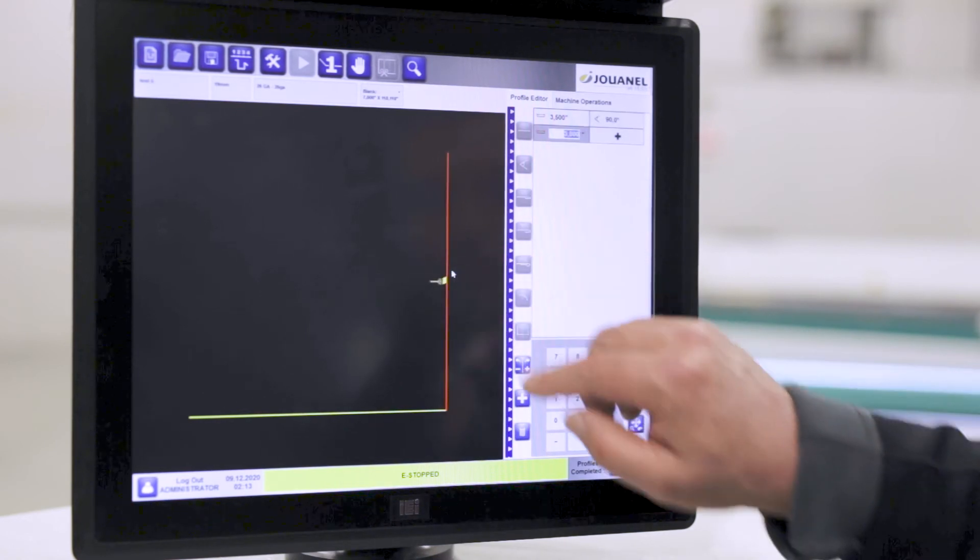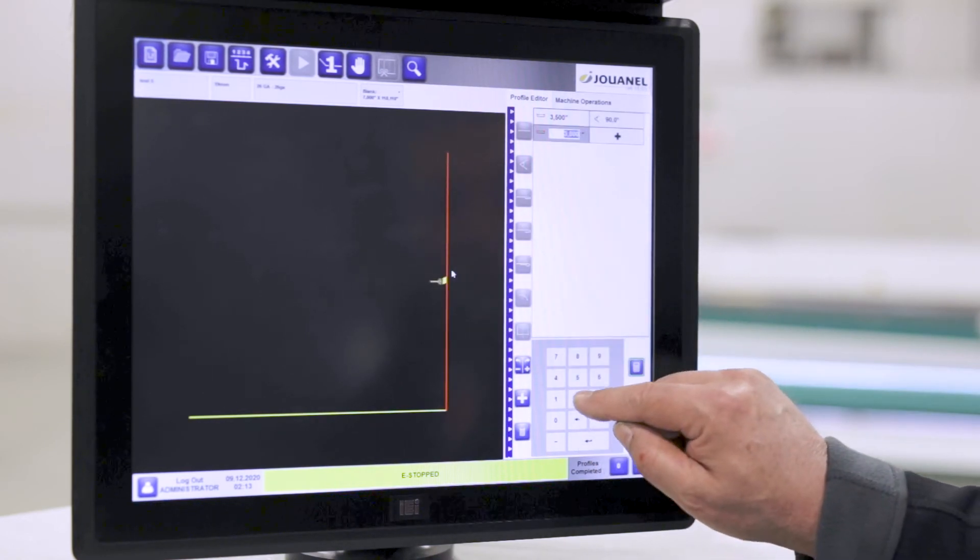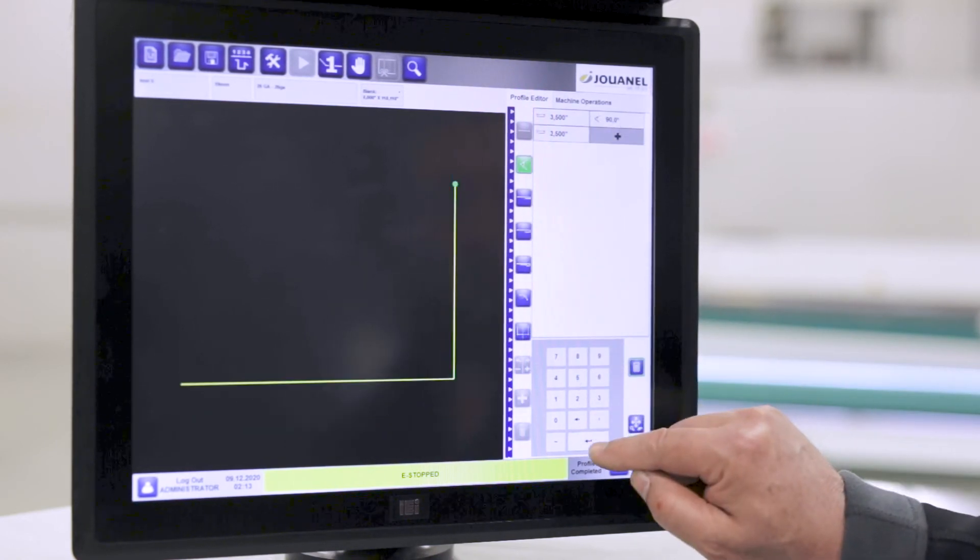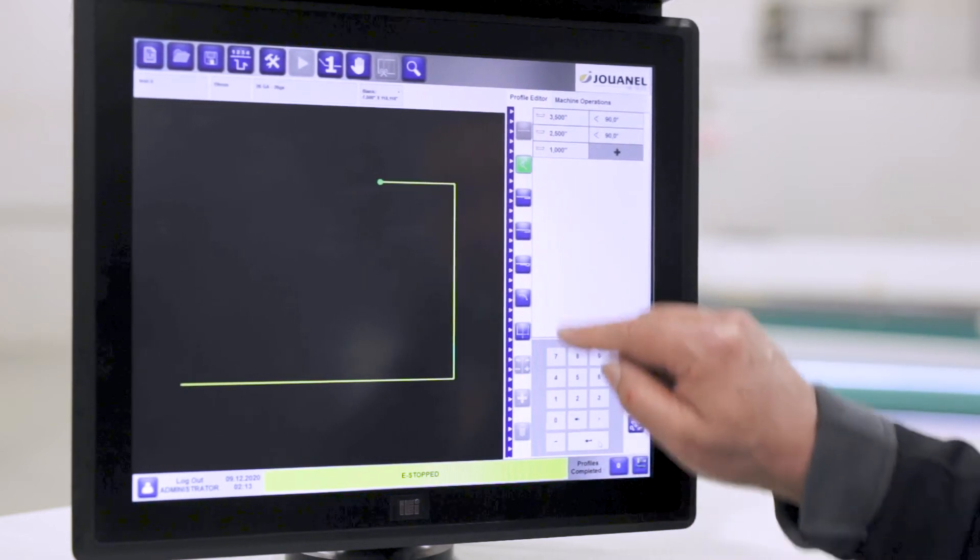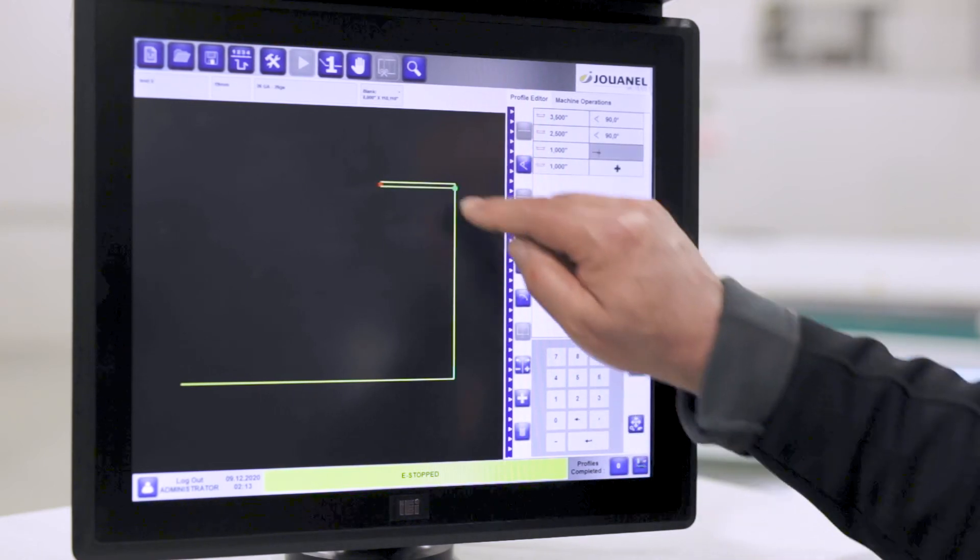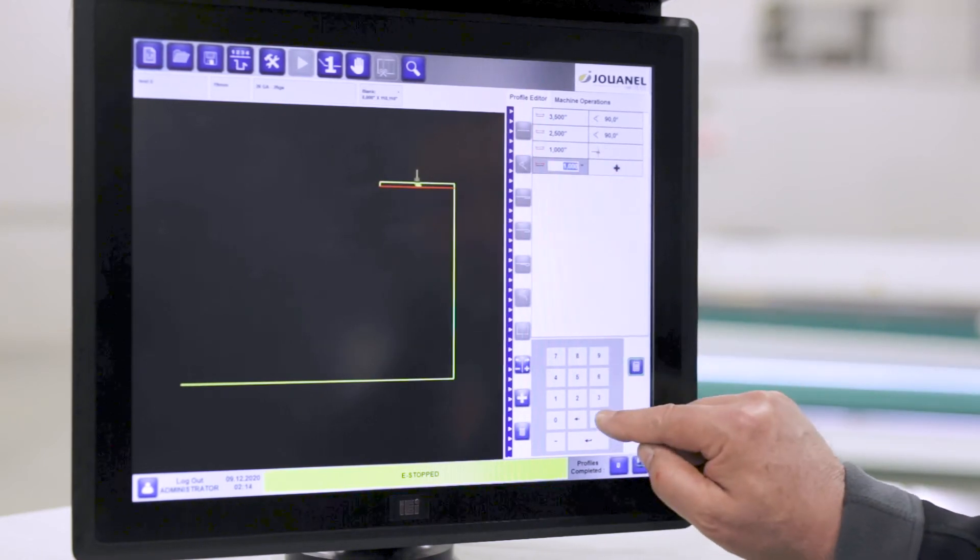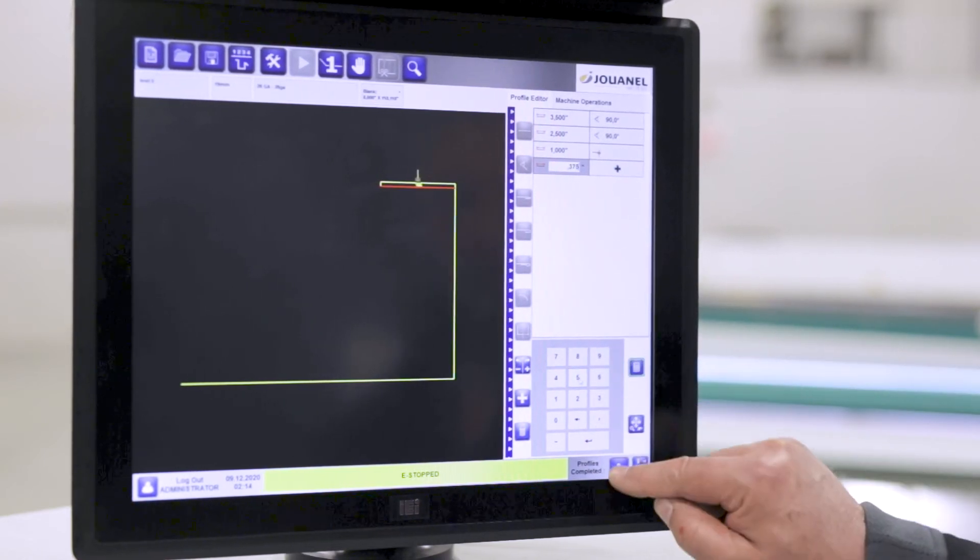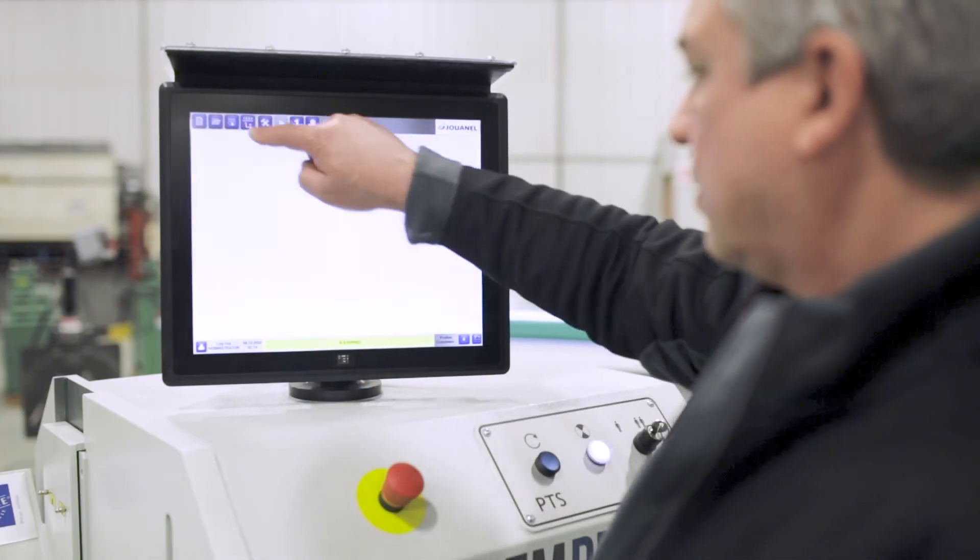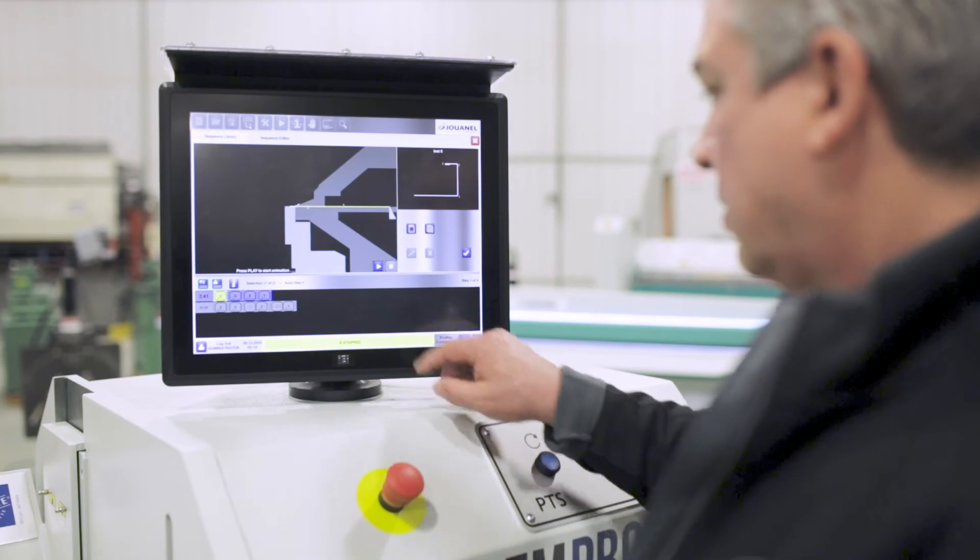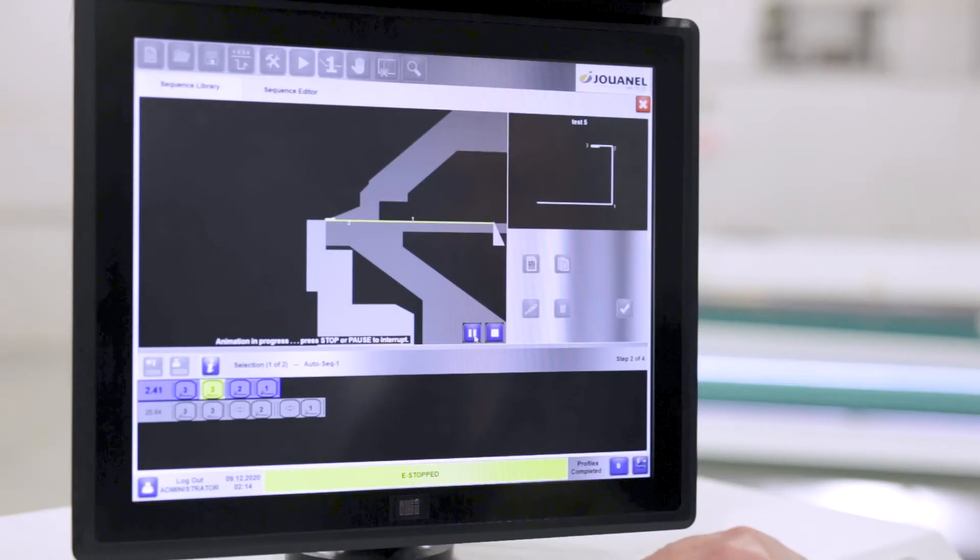New profile shapes are quickly programmed by simply entering dimensions and geometric features. The control automatically determines the ideal bending sequence so production can start immediately with minimal trial and error.